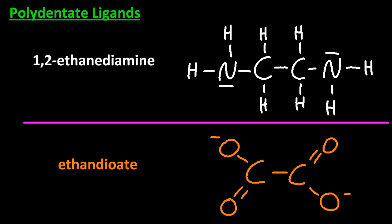13.2 polydentate ligands. Poly means many, and dentate relates to teeth. So these are ligands with many teeth. Looking at the first molecule, there are two lone pairs, one on each of the nitrogens. Those act to make dative covalent bonds to the central transition metal iron to make a complex — so it's kind of two bites that ligand has at the central transition metal.